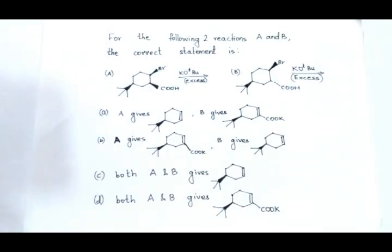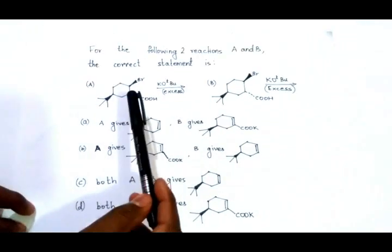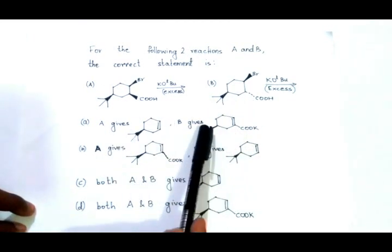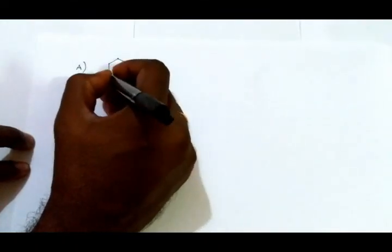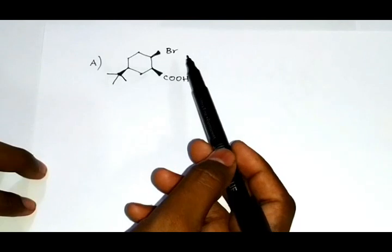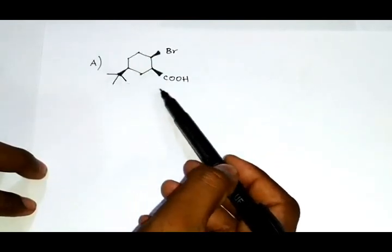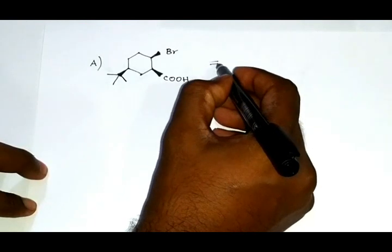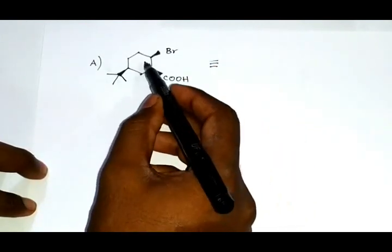In this video we will solve a question from CSIR Net June 2012. For the following two reactions, the correct statement is: reaction A — this is the product. We can draw the equivalent structure of this reactant.